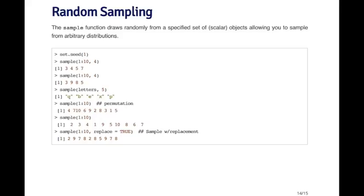So here, for example, I'm going to sample from the integers 1 to 10. So I pass it the vector of integers 1 through 10, and I tell it that I want to sample randomly 4 of them without replacement. So I'm just choosing 4 random entries from 1 to 10, and here I get 3, 4, 5, 7. If I do it again, I get 3, 9, 8, 5. So in this example, I won't get repeated numbers because I'm not sampling with replacement.